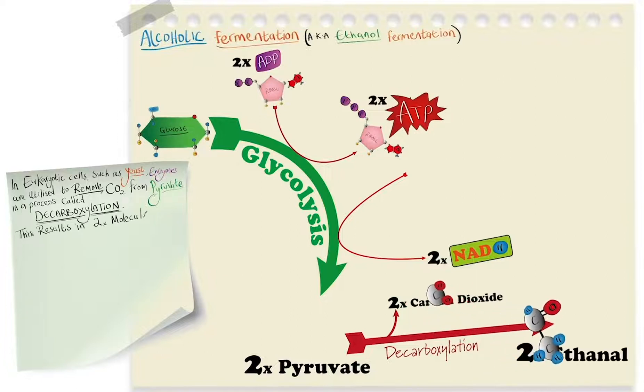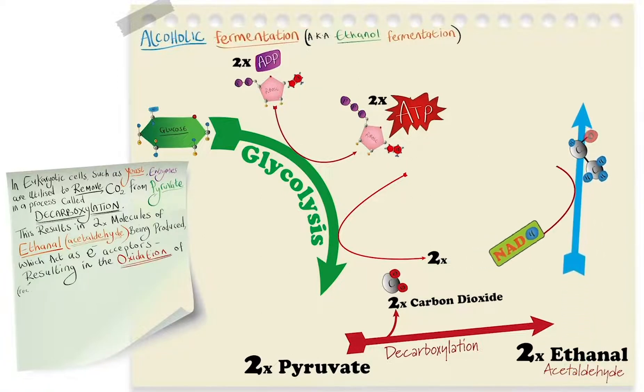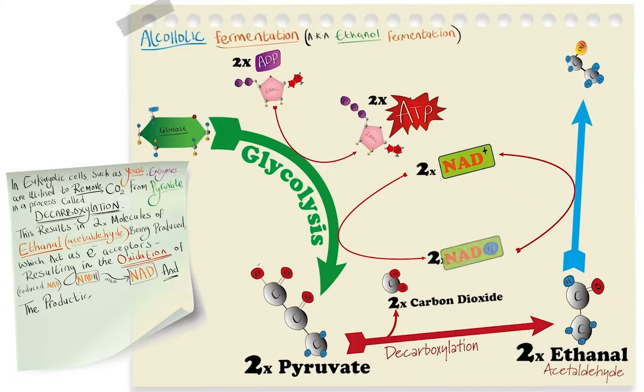This results in two molecules of acetaldehyde being produced, which act as electron acceptors, resulting in the oxidation of NADH into NAD and the production of ethanol.